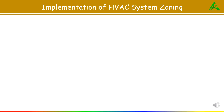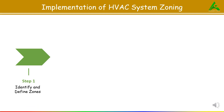Now let's see the implementation of HVAC system zoning. Implementing HVAC system zoning involves strategic planning, the selection of appropriate components and proper installation. Here we will see a step-by-step guide with detailed examples for clarity. The first step is to identify and define zones. The first step is to determine which areas of the building should be treated as separate zones, since each zone may differ based on functionality, usage pattern and temperature needs.